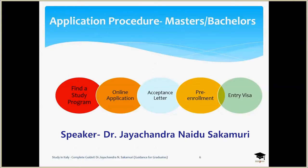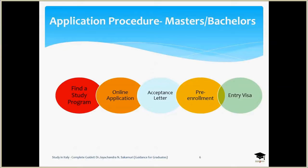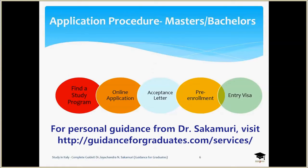The application procedure for masters and bachelors is more or less the same — it primarily consists of five steps. The first step is to find a study program at a particular university, so you need to search different universities and find the interesting master or bachelor program that you wish to apply for. The second step is to check the eligibility and submit the online application to the university.